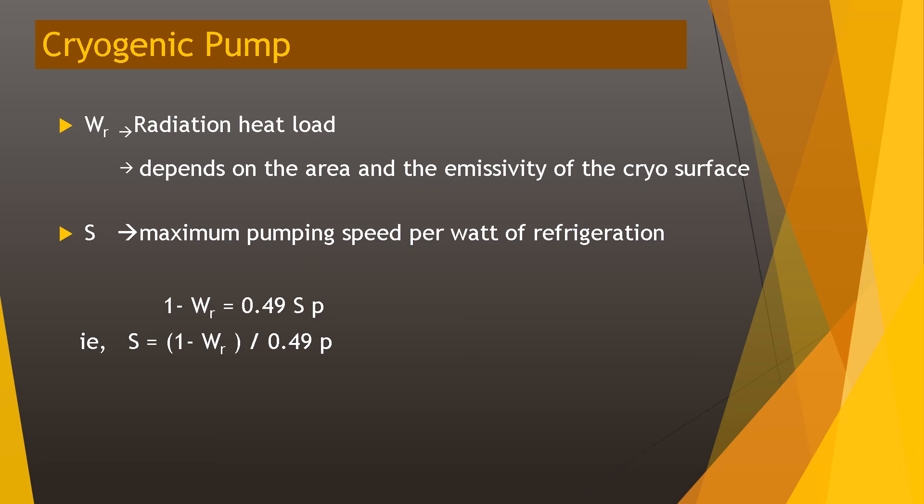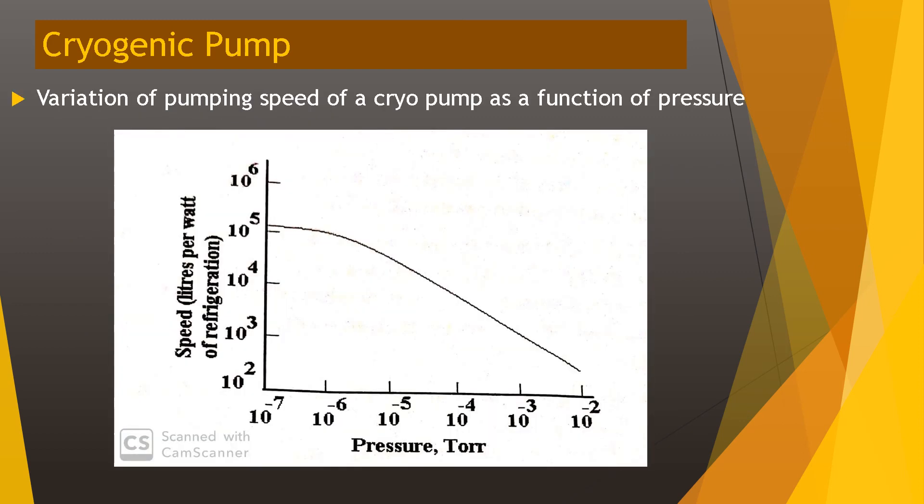The formula is: 1 − W_R = 0.49 × S × P, giving S = (1 − W_R) / (0.49 × P). This figure represents the variation of pumping speed of a cryopump as a function of pressure, where pumping speed decreases as pressure increases.